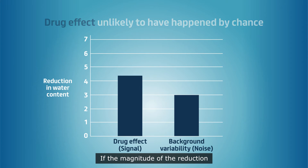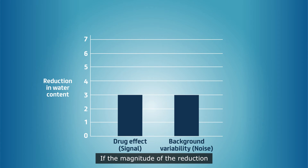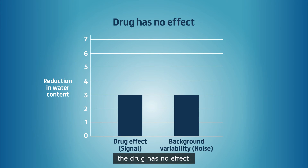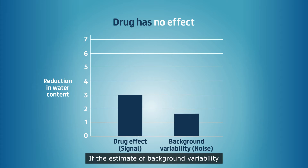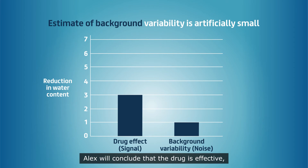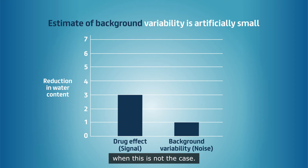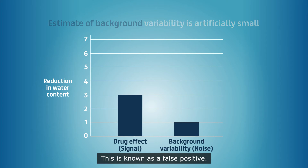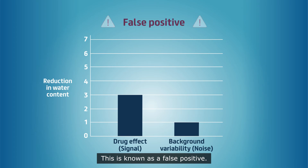If the magnitude of the reduction is similar to the background variability, the drug has no effect. If the estimate of background variability is artificially small, Alex will conclude that the drug is effective when this is not the case. This is known as a false positive.